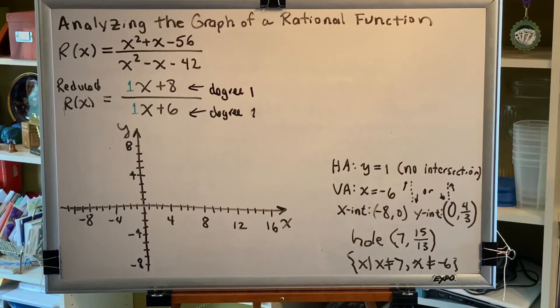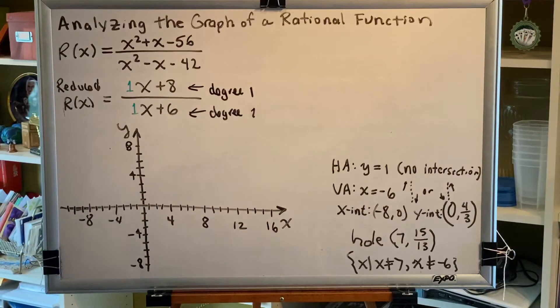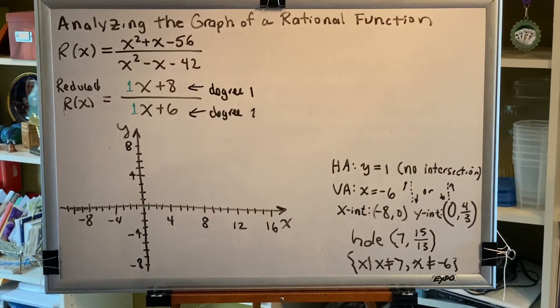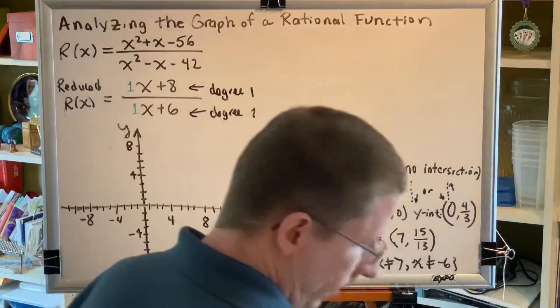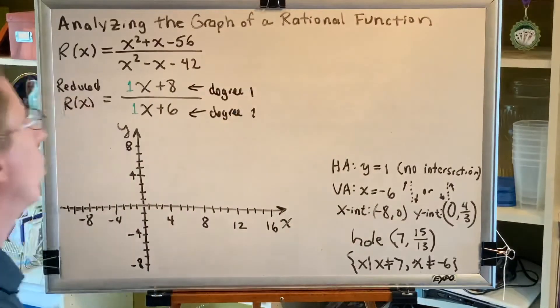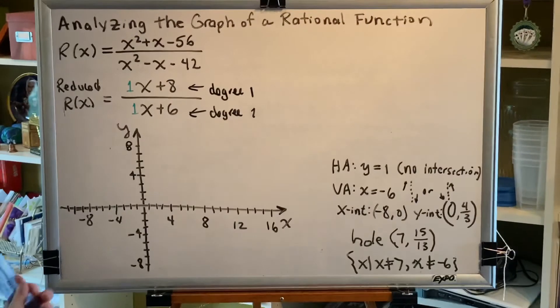We know we have a hole at location 7 comma 15 thirteenths, and 15 thirteenths is just a little bit higher than 1. And since we've got a horizontal asymptote at 1, let's go ahead and draw that horizontal asymptote first, and then we can make sure that our hole is a little bit above it.